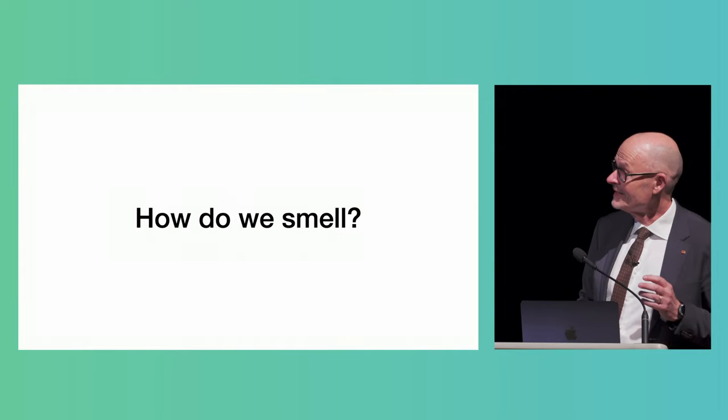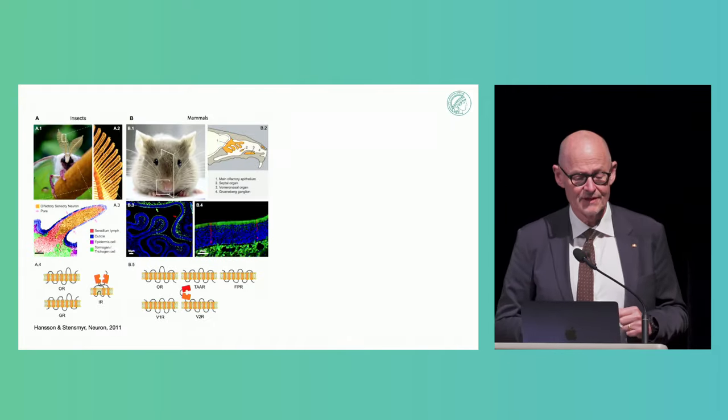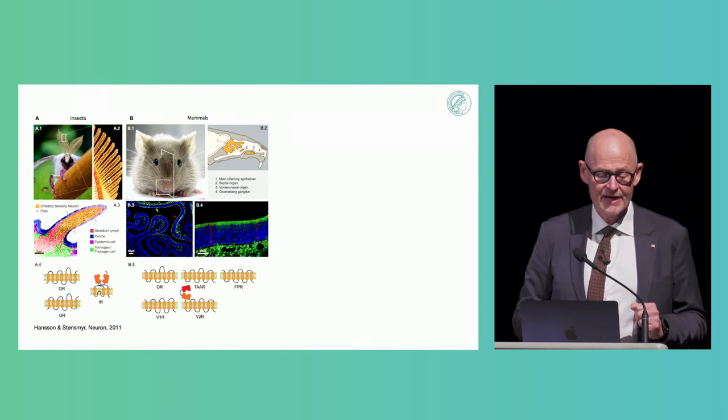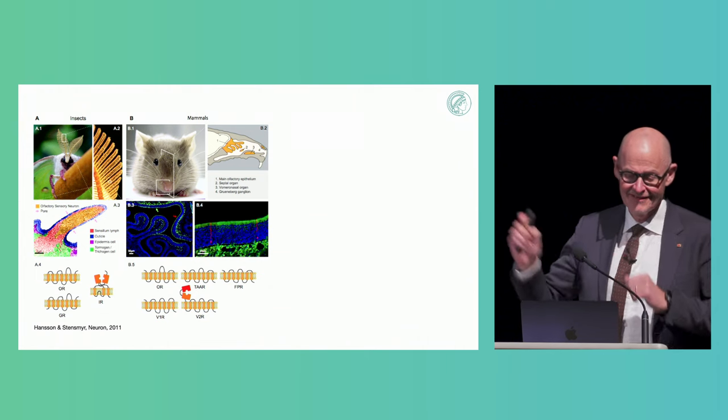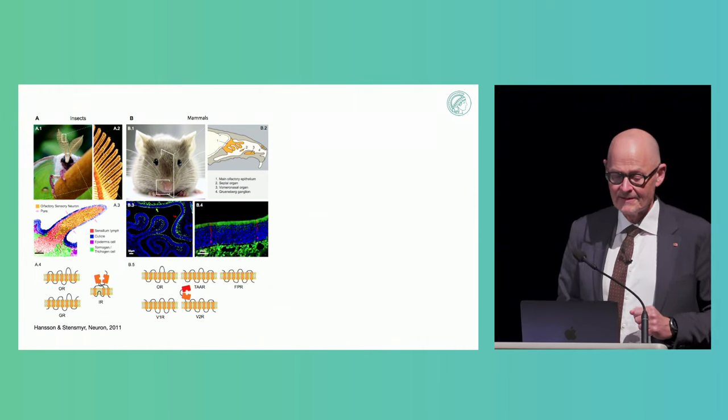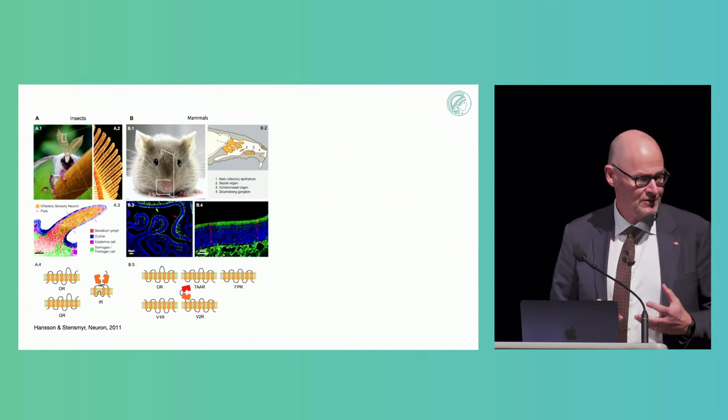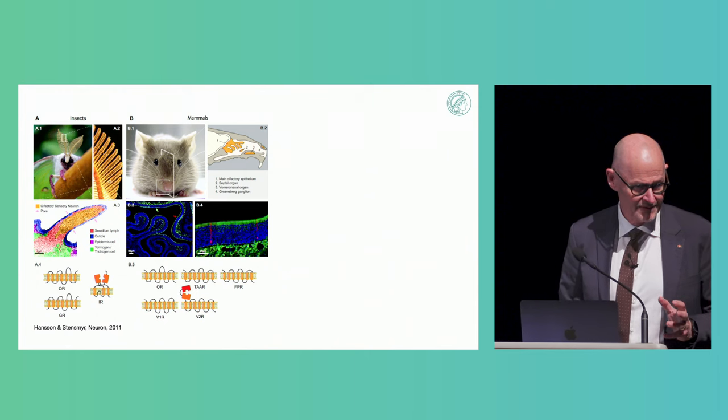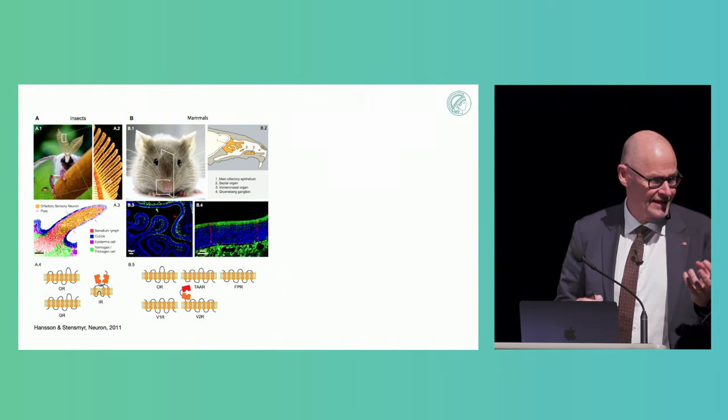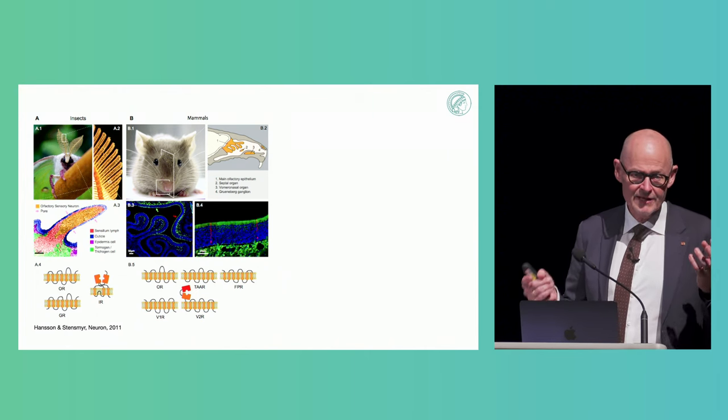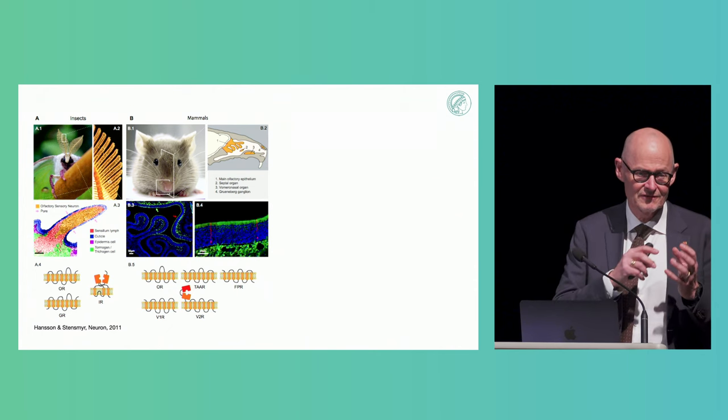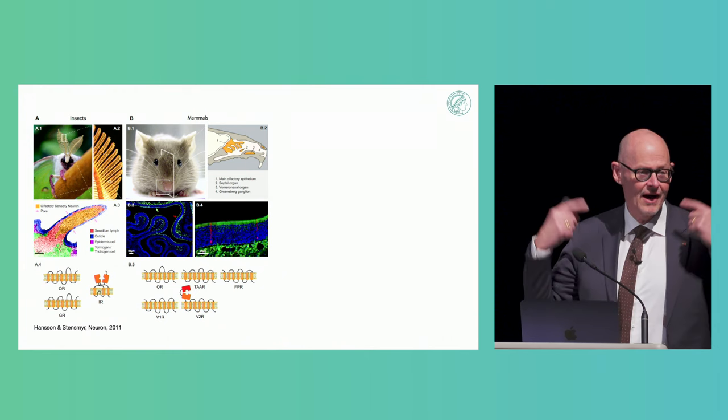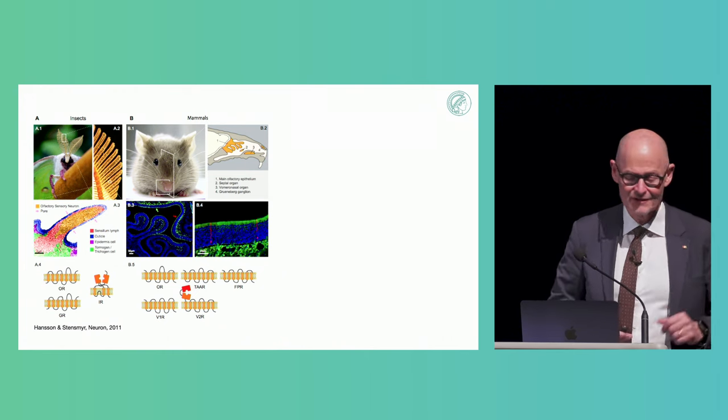Here we have representatives - the insect to the left with its antenna. The antenna is the insect nose. What makes us able to smell are those little structures you see at the bottom there. Those are seven transmembrane receptors. They act like little locks in your nose, and when the right molecule comes and fits into those locks, it releases nerve action.